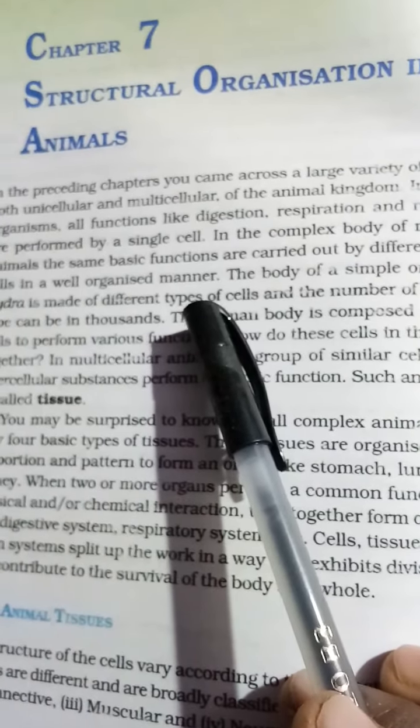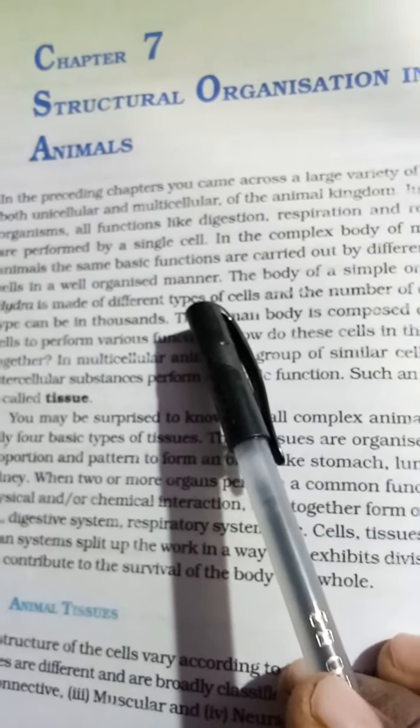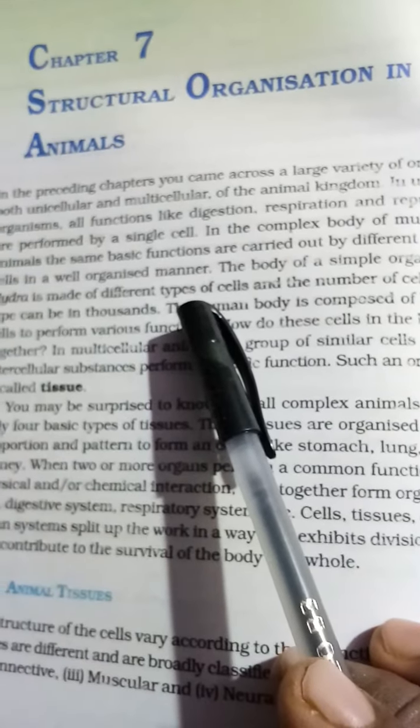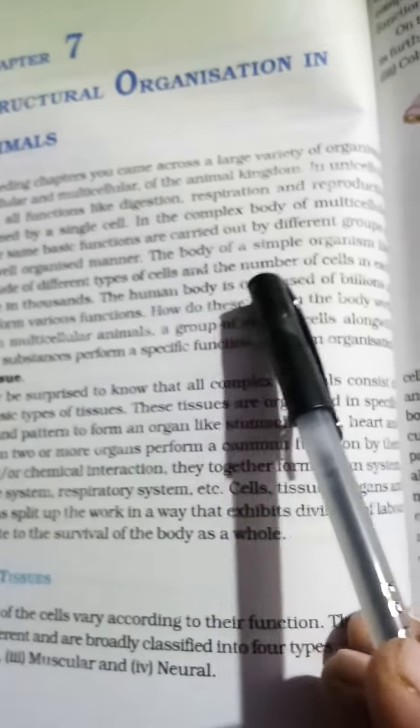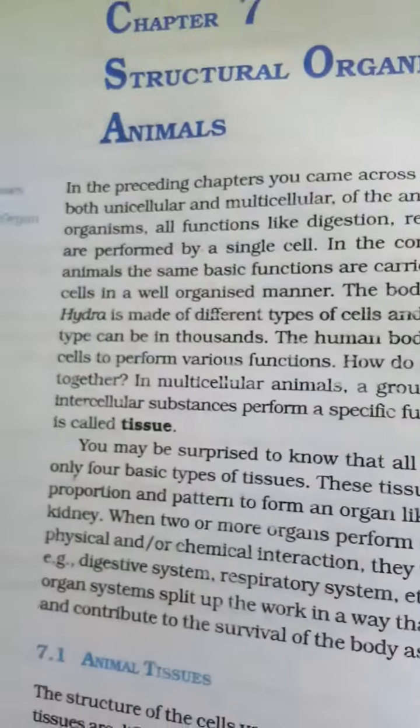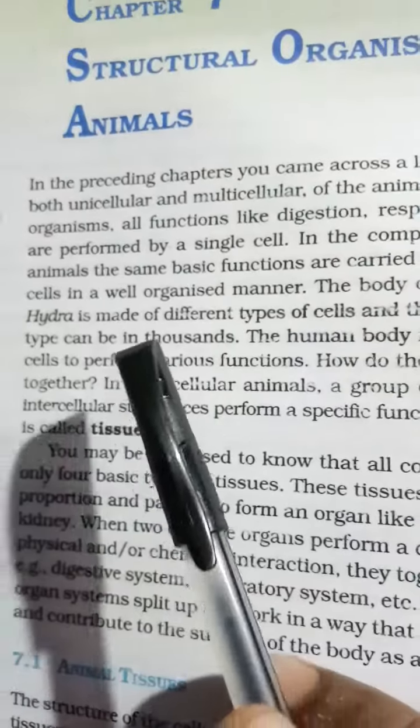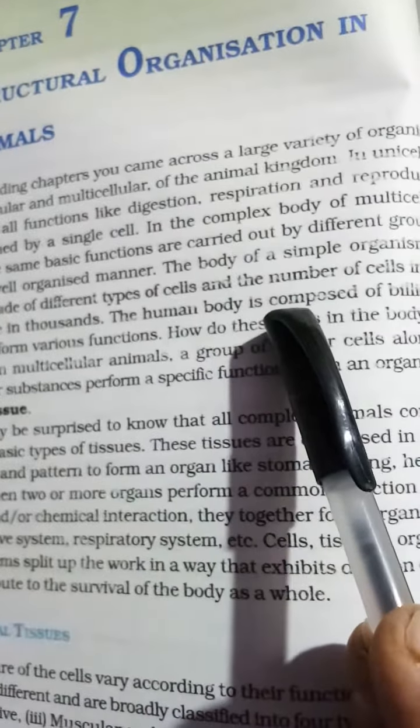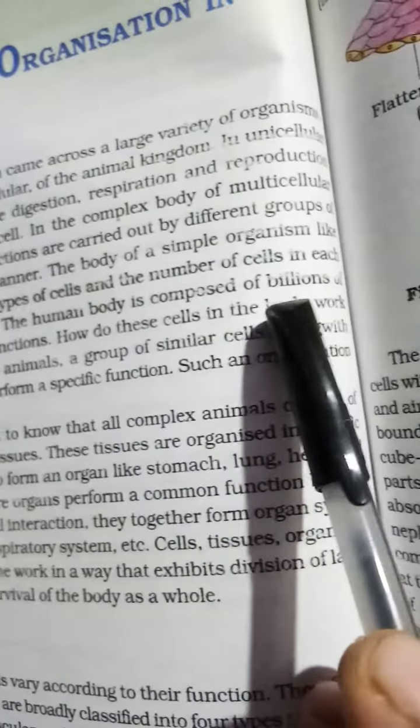So multicellular and unicellular will be the two segments of the structural organization in animals. The body of a simple organism like Hydra is made of different types of cells, and the number of cells of each type can be in the thousands.